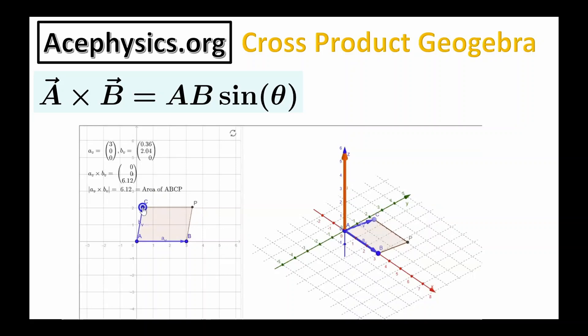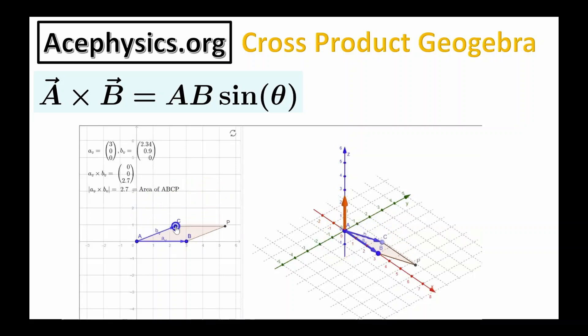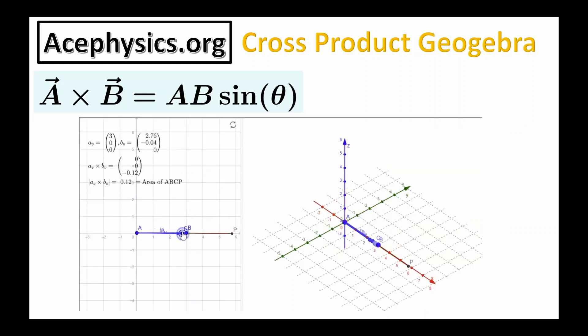If I rotate vector B like this, the area of the parallelogram gets larger and the cross product is a bigger vector. And if I rotate vector B the other way, the area of the parallelogram gets smaller, eventually reaching zero area.